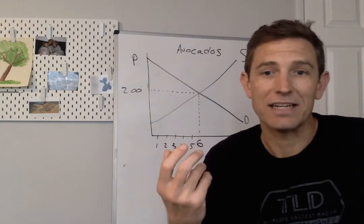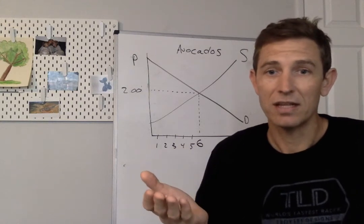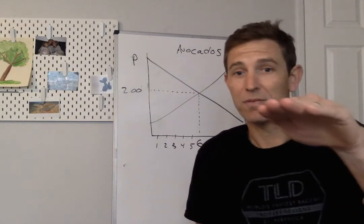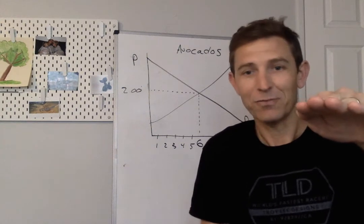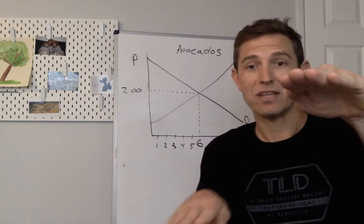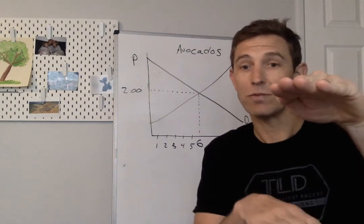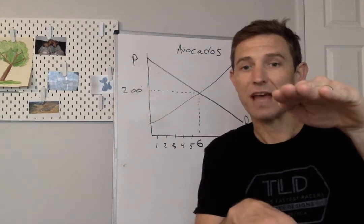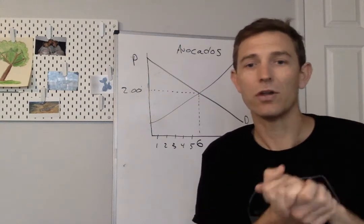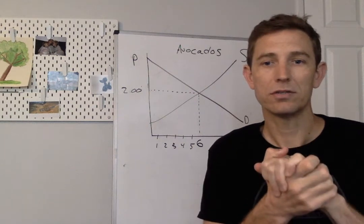There's a similar idea for sellers, right? When sellers sell something they're able to receive the price that they actually sell the good for, but a lot of times the lowest that they would be willing to take is something underneath that, something lower than that, and that difference for a seller is called producer surplus.